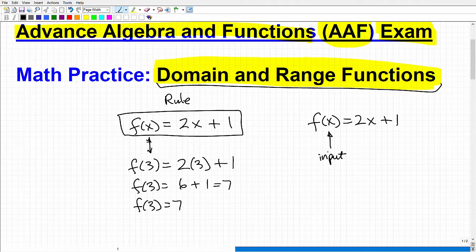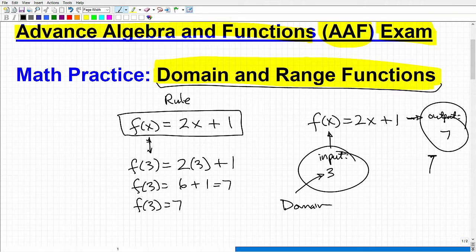So this x is 2 times x. So it's going to be 2 times 3 plus 1. So f of 3 will be what? 2 times 3 is 6 plus 1 or 7. So f of 3 equals 7. So this is a basic function here. And let's go ahead and write it over here. So it's a rule.